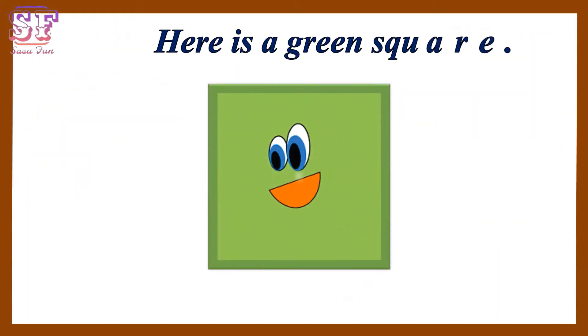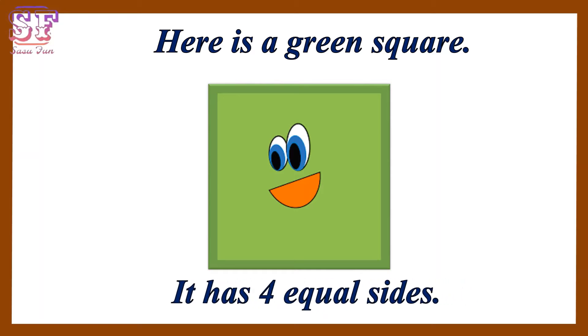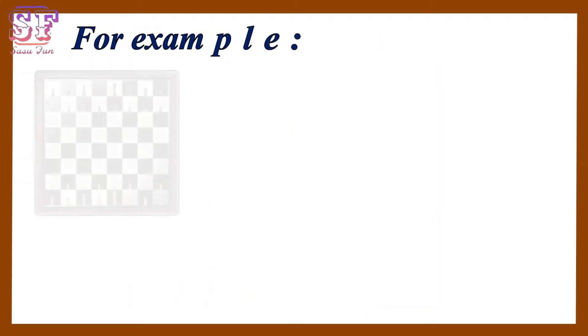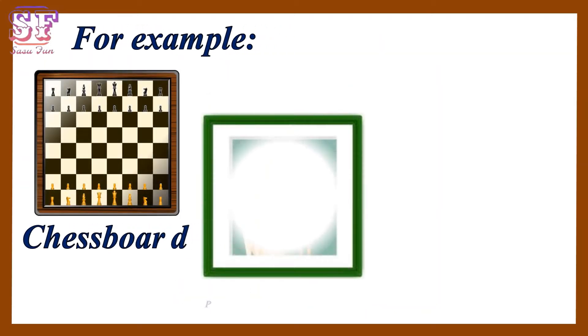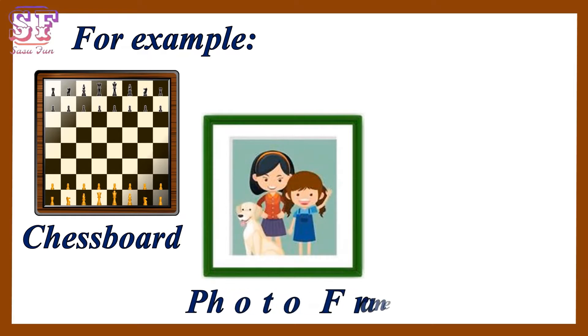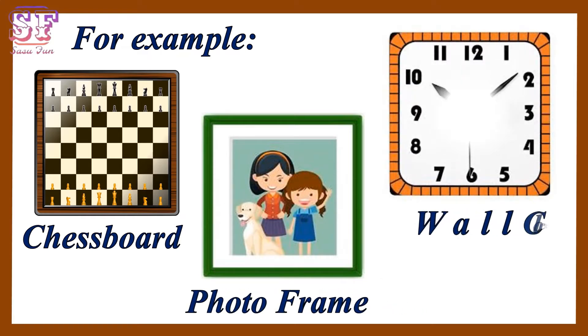Here is a green square. It has four equal sides. For example, chess board, photo frame, wall clock.